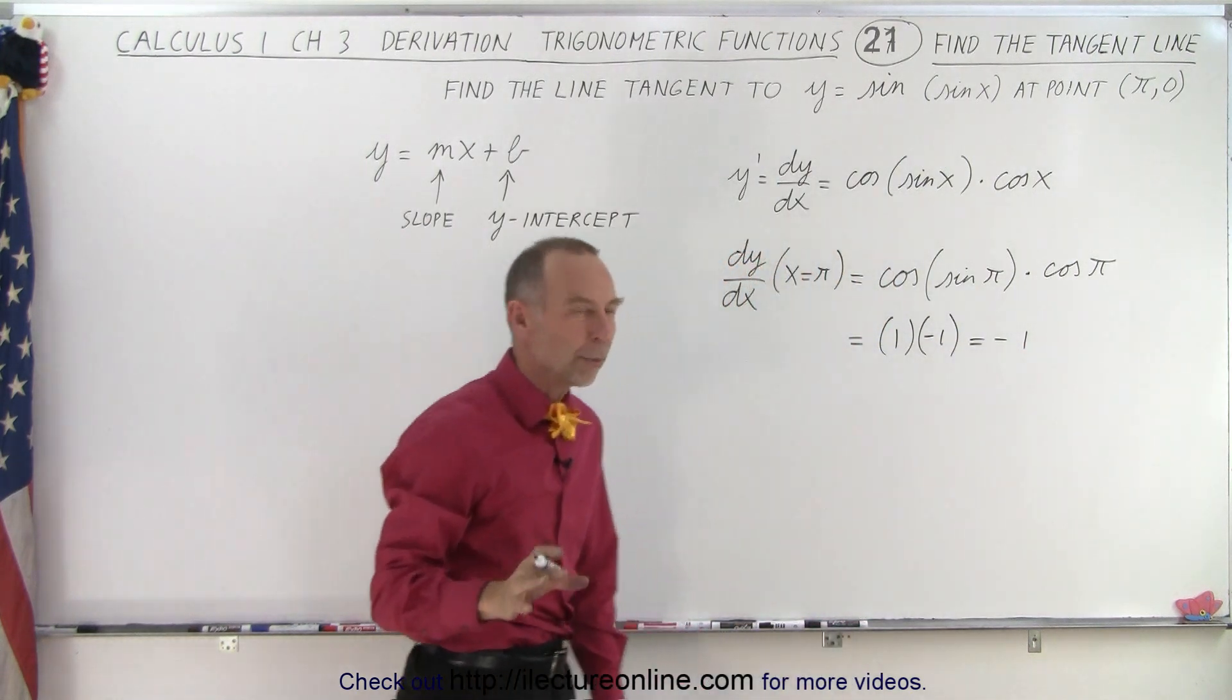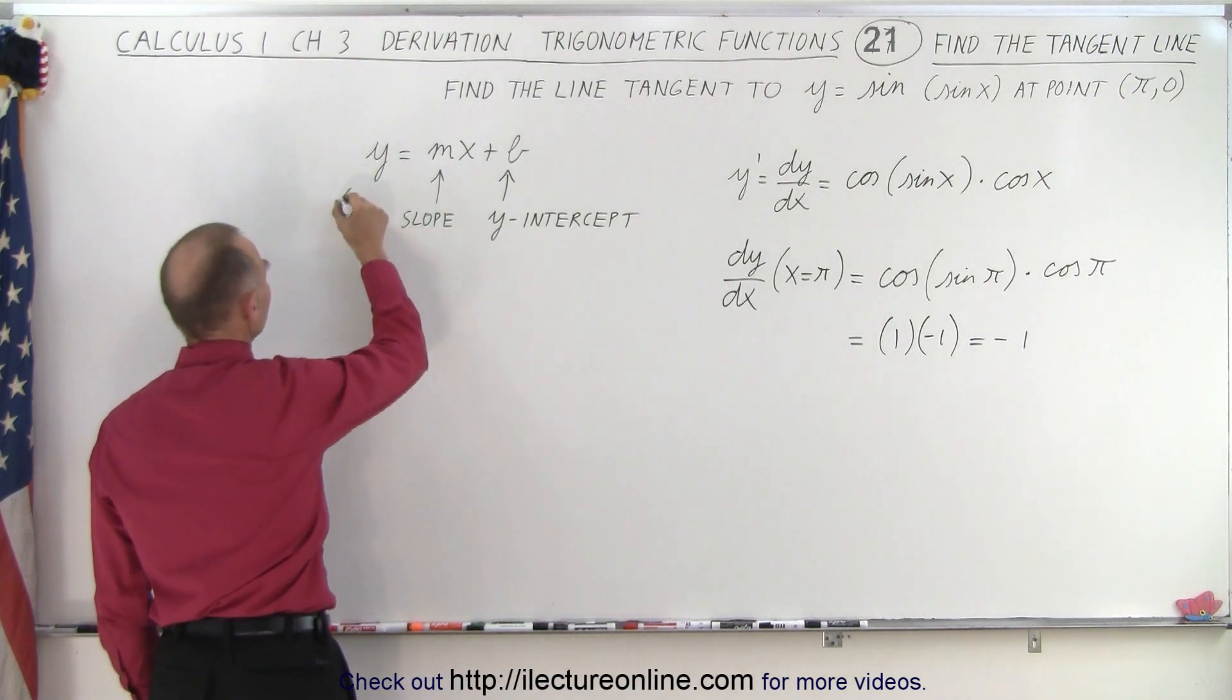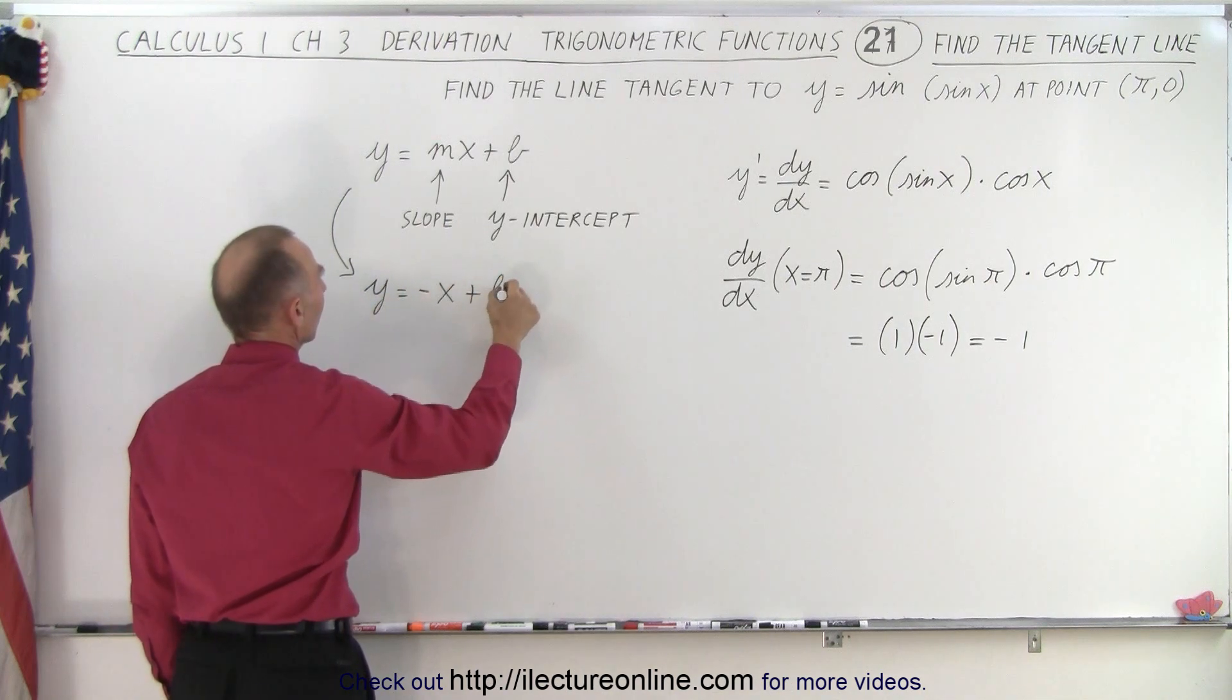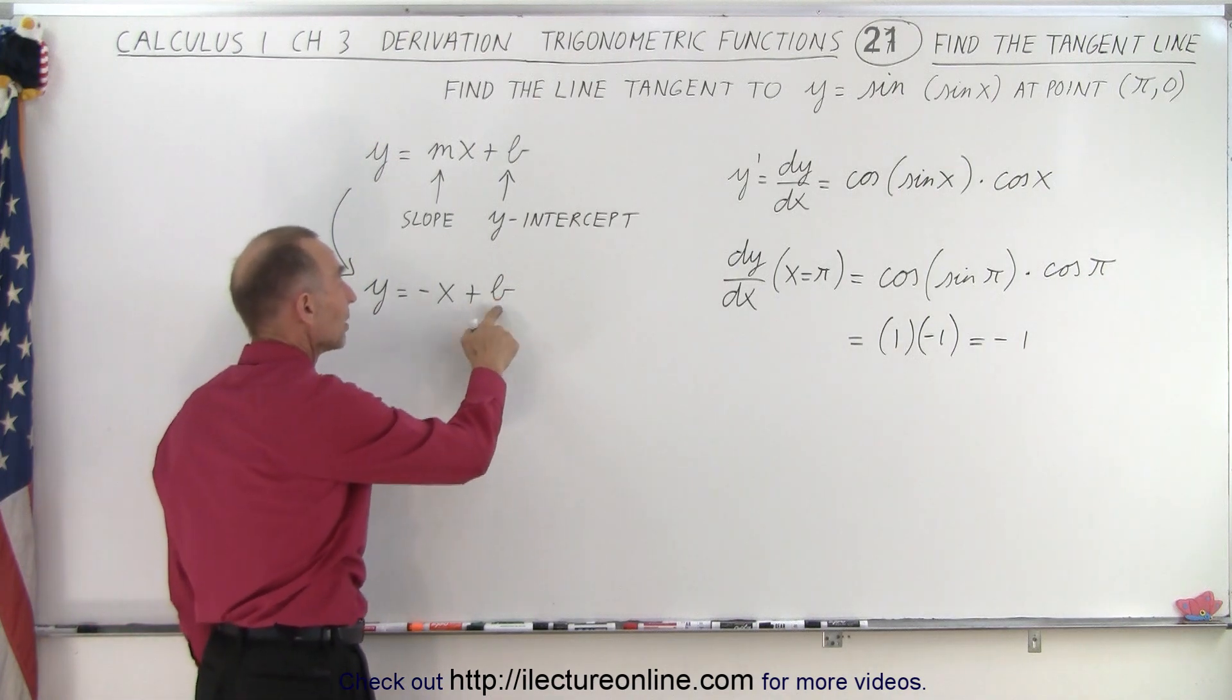Which, that's the slope of our function at that particular point. So now we realize that the equation looks like y equals minus x plus b. The next thing we need to do is find the intercept b.